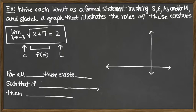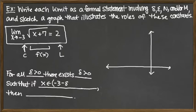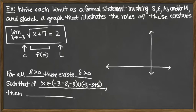Notice also that we're not looking at one-sided limits, so we're going to have a punctured interval for the x's. The formal epsilon-delta statement is: for all epsilon greater than 0, there exists a delta greater than 0, such that if x is an element of a punctured interval around c — well, c is negative 3 — so we're talking about the interval from negative 3 minus delta up to negative 3, union negative 3 up to negative 3 plus delta.